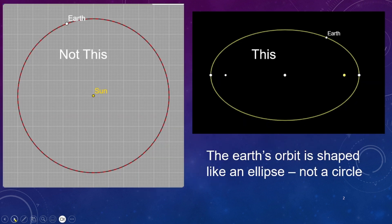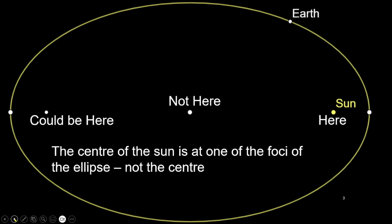So the Earth's orbit is shaped like an ellipse, not a circle. The Sun is centered at one of the focal points of that ellipse.